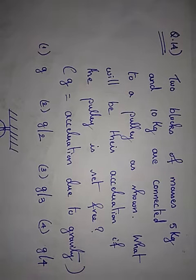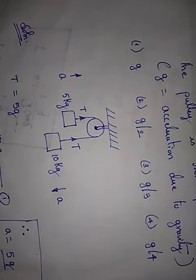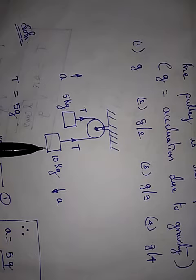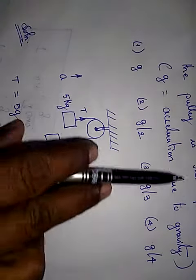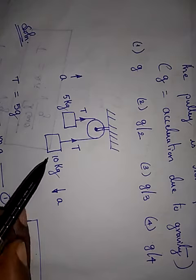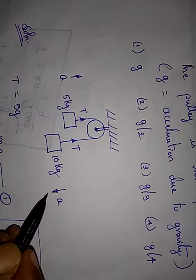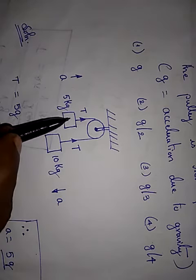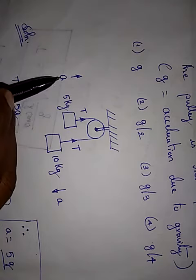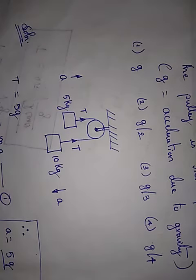So the diagram is, we have 5 kilogram, 10 kilogram and it is given that the pulley is set free. That means, this is of 10 kilogram, therefore, this will rotate in this direction. So acceleration due to gravity will be in this direction. Whereas since this is of lower weight, it moves upwards. So acceleration will be in opposite.